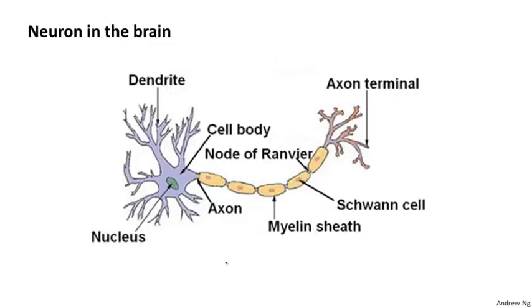The two things to draw attention to are that first, the neuron has a cell body. And moreover, the neuron has a number of input wires, and these are called the dendrites. We think of them as input wires, and these receive inputs from other locations.